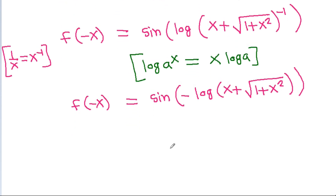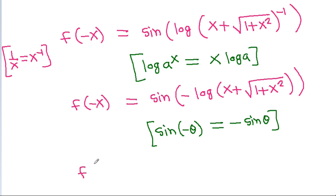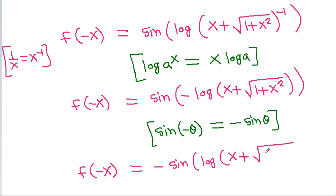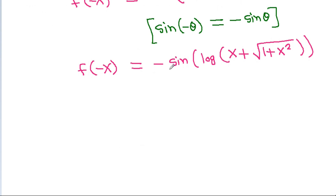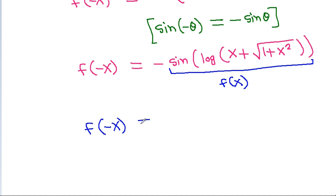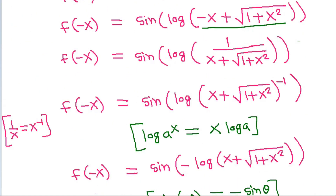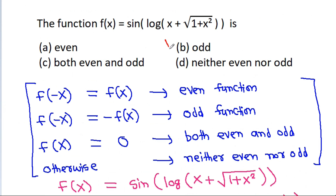And since sin(-θ) is equal to minus sin(θ), f(-x) will be equal to minus sin of log of x plus square root of 1 plus x square. And this is f(x). So f(-x) is equal to minus f(x), which means it is an odd function. So option B is correct.